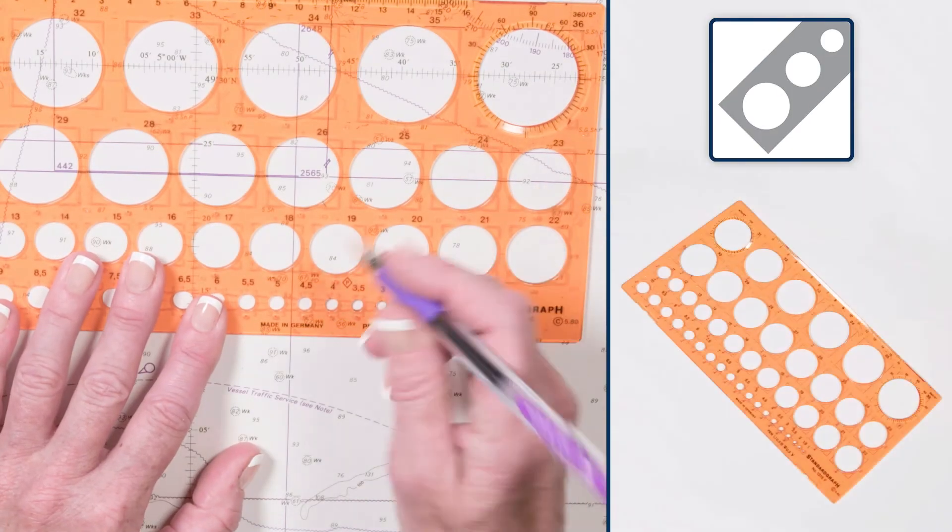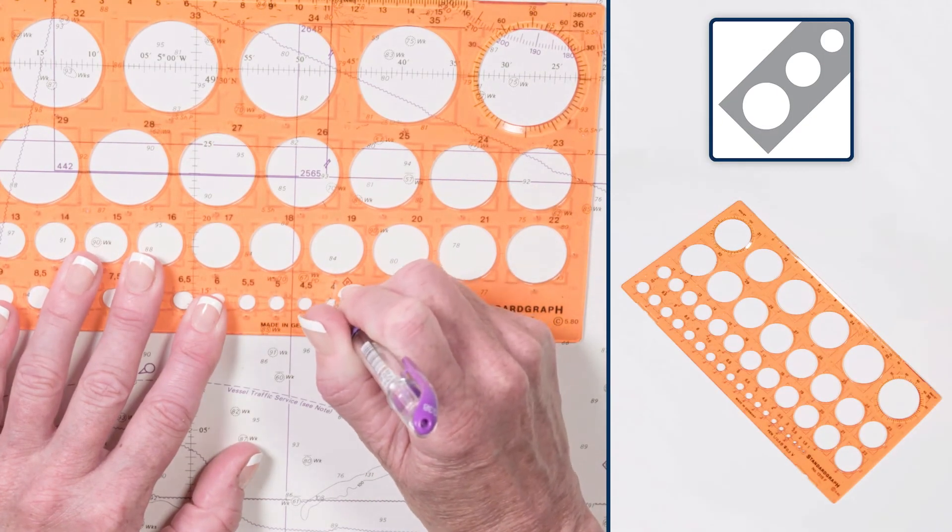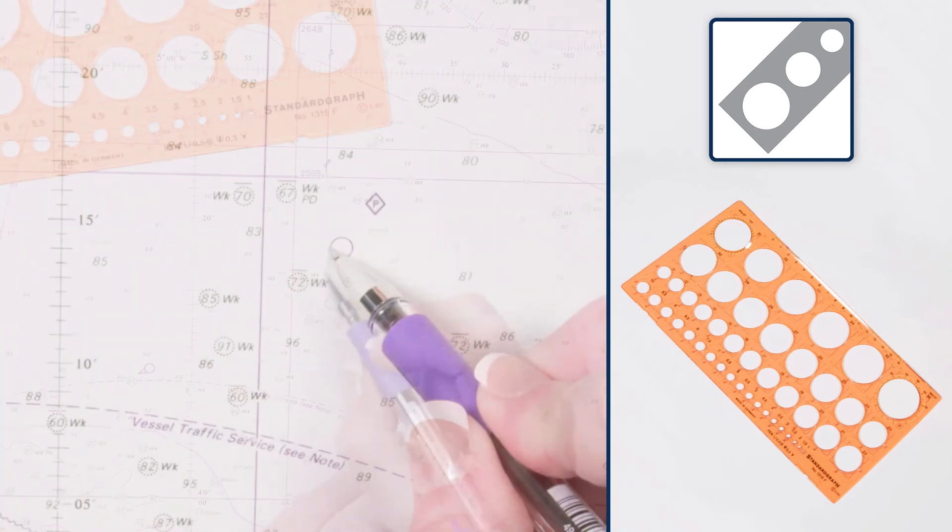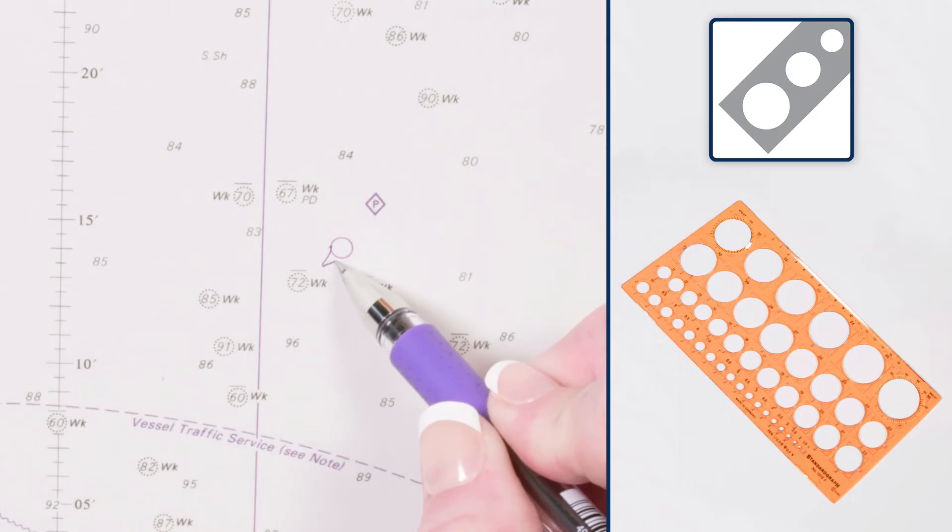A template with different hole sizes is used for drawing symbols such as radio reporting points, pilots and small circular areas.